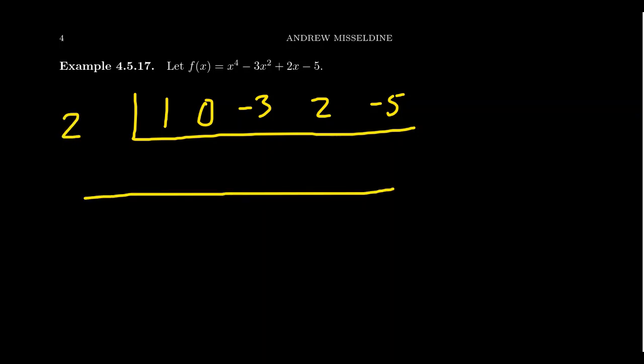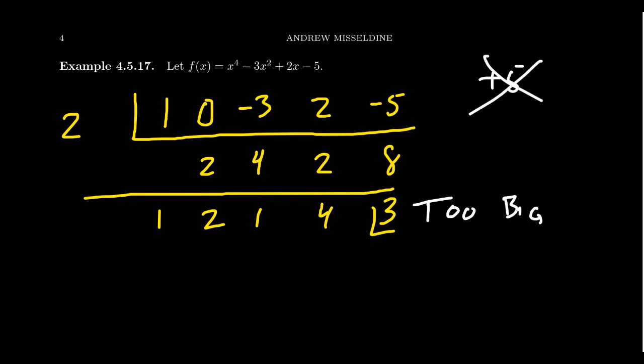So if you bring down the 1, 1 times 2 is 2 plus 0 is 2 times 2 is 4 minus 3 is 1 times 2 is 2 plus 2 is 4 times 2 is 8 minus 5 is 3. So you'll notice that the bottom row only contains positive. There's not a single negative there. And so what this tells us here is that we tried a number that was too big. If we want to find a positive root of the polynomial, we need to try something smaller. So for example, we know for a fact that positive 5 will not work because if 2 was too big, then 5 is even worse. So we should try something smaller.